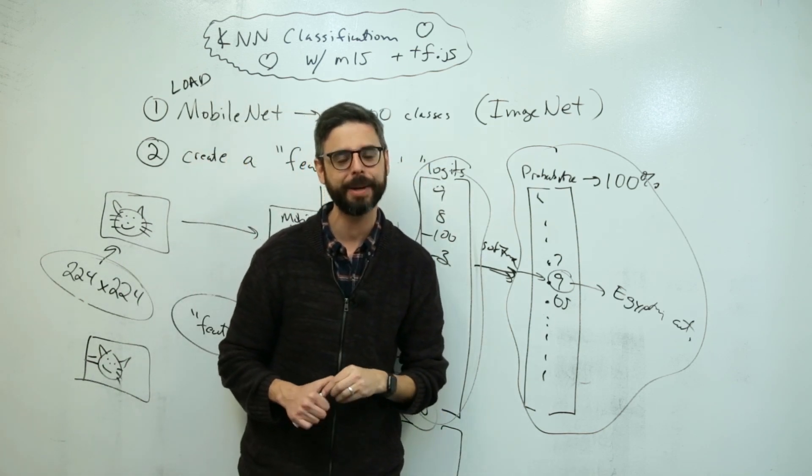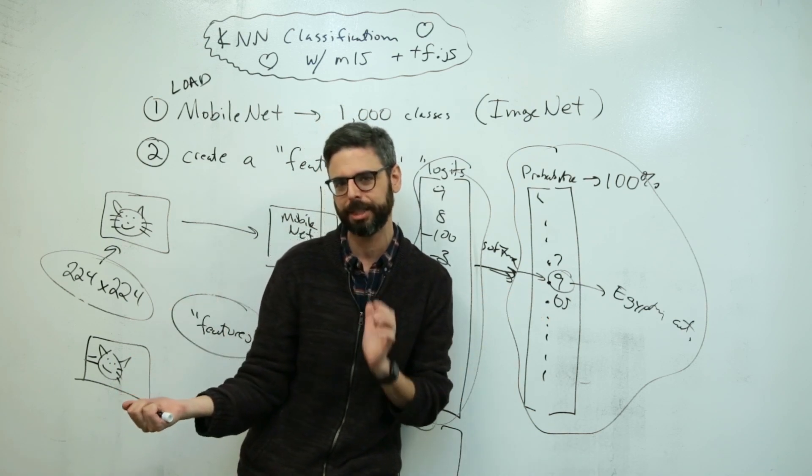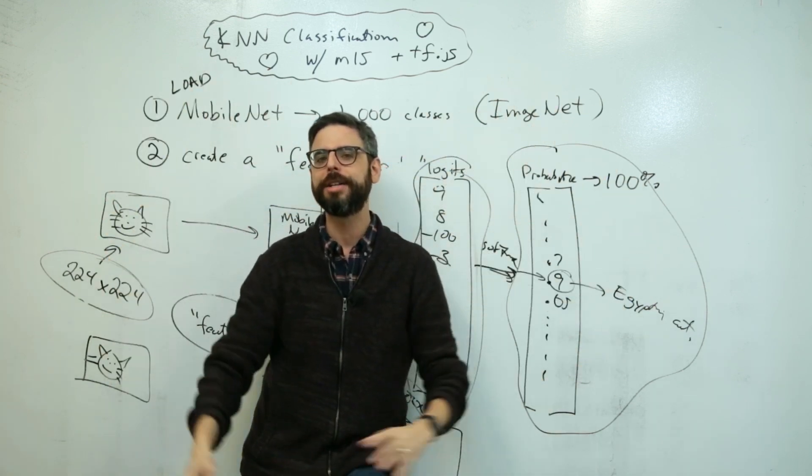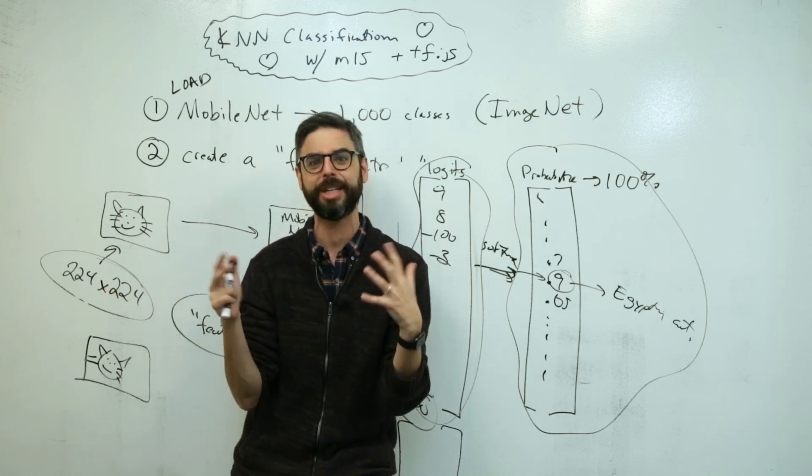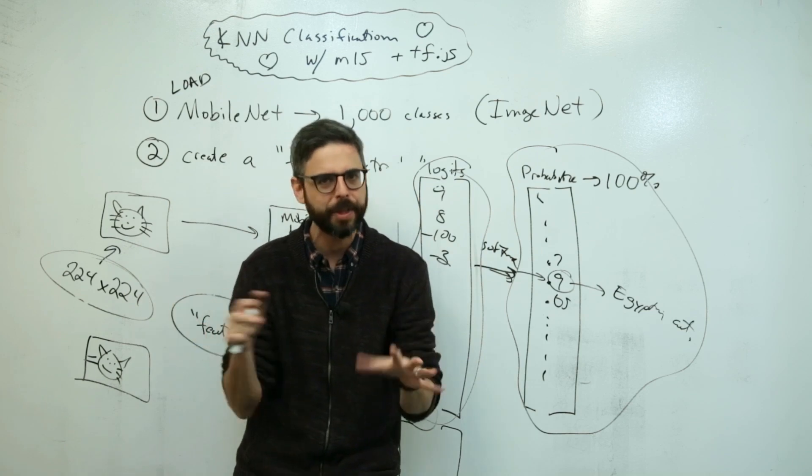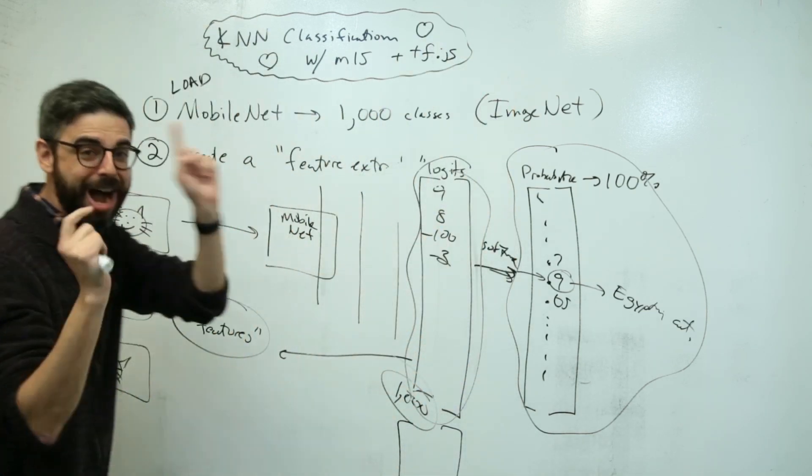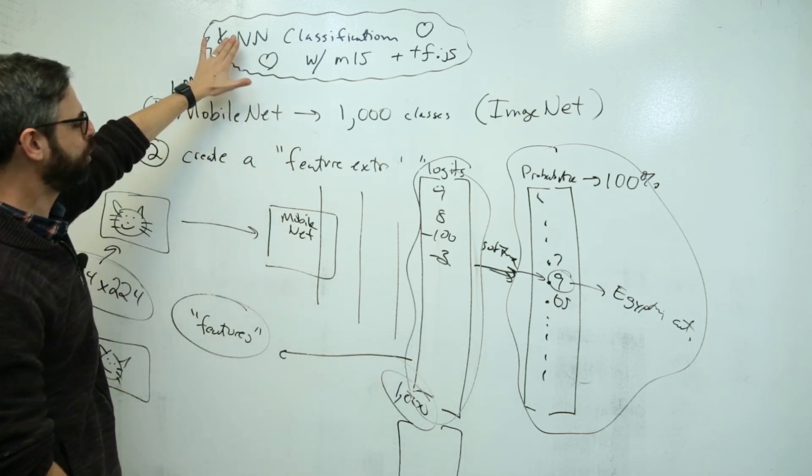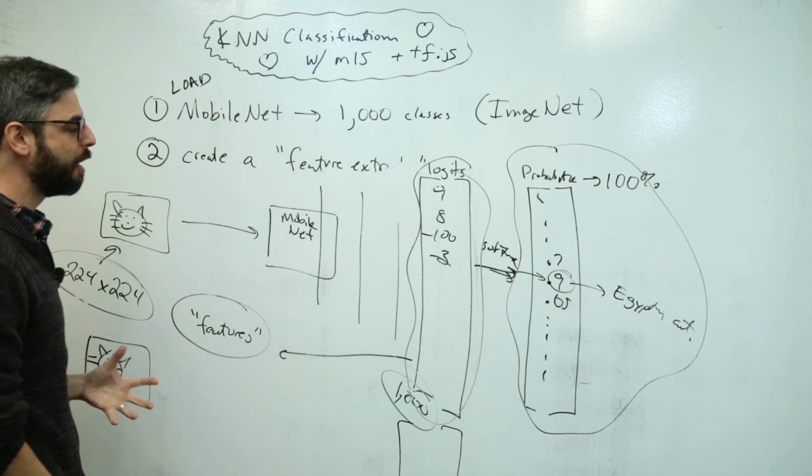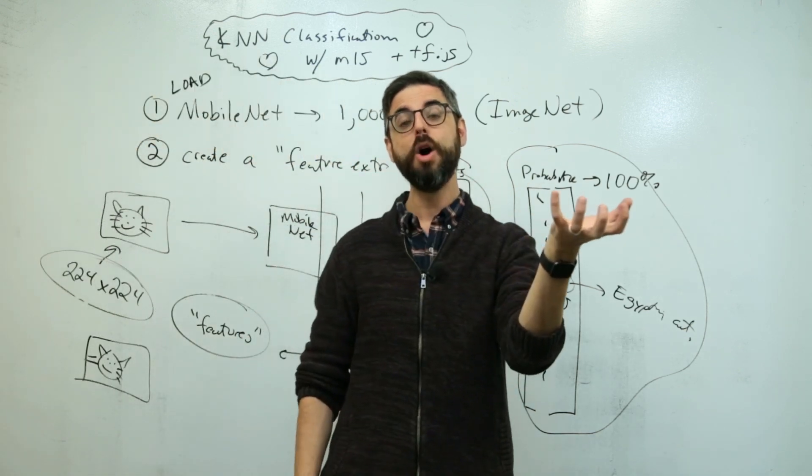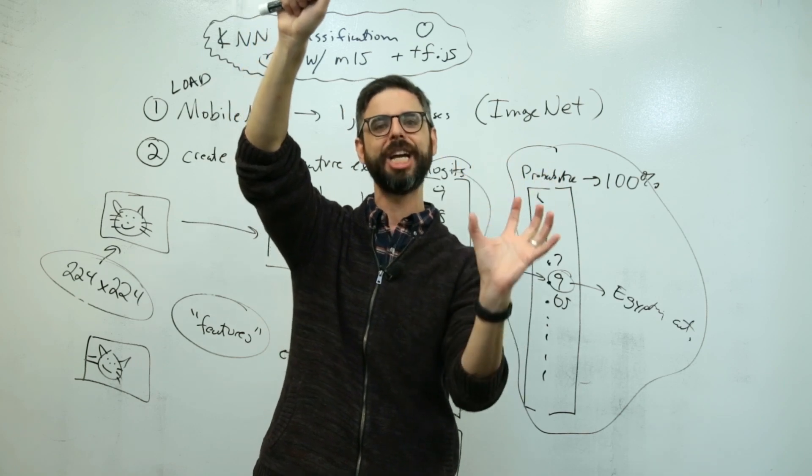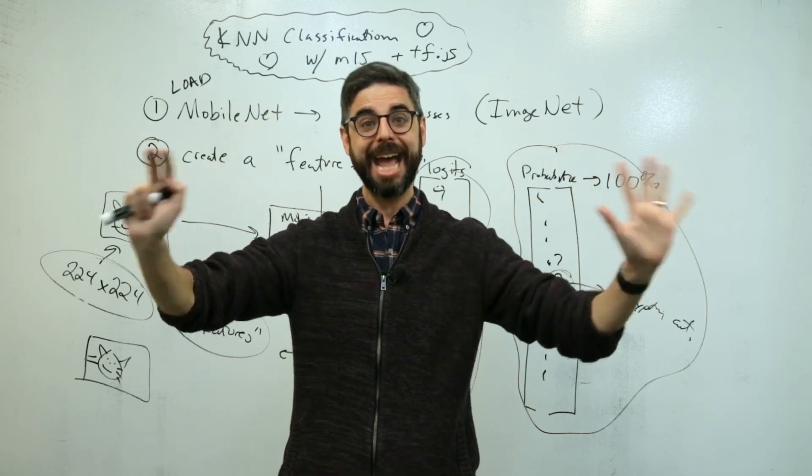This is the feature extraction, getting these features, that essence, the semantic fingerprint of the image. If I have two semantic fingerprints of two images that are arrays of numbers, there's lots of math I could start to apply. This now finally is the moment where I can say, this is how it relates to KNN classification. KNN stands for K nearest neighbors.